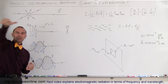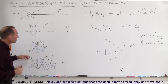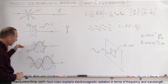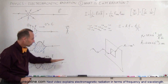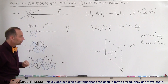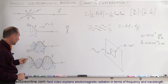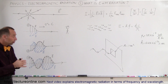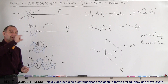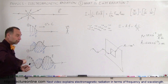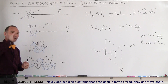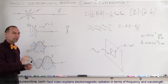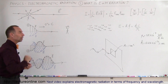Electric field, magnetic field — thumb points in the direction of the motion, and the motion will be at the speed of light. As we continue to move this charged object up and down, the disturbance will continue to move outward at the speed of light. The frequency of the oscillating electric field is directly proportional to the frequency of the oscillation of the charged object. If you move the object back and forth very quickly, the oscillation will have a higher frequency; if you move it slowly, the oscillations will have a lower frequency.